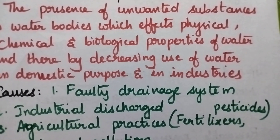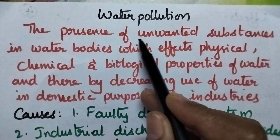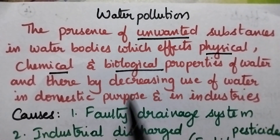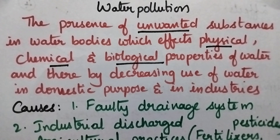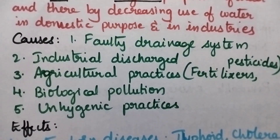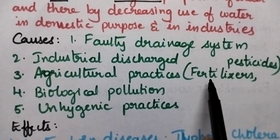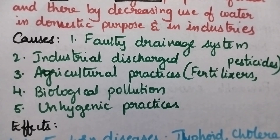Water pollution means it is due to the presence of excessive unwanted substances in a water body, which affects the physical, chemical and biological properties of the water, thereby causing decreased use of the water for both domestic and industrial purposes. The major causes of water pollution include faulty drainage systems, industrial discharges, agricultural practices such as excessive use of fertilizers and pesticides, biological pollution and poor hygienic practices.